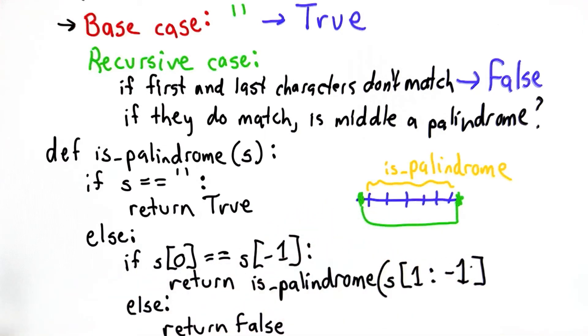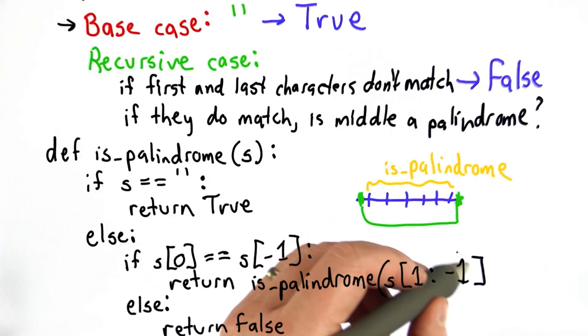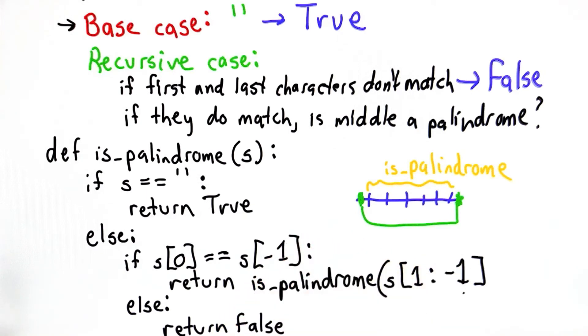And remember, with our indexing, the last value here is not included. So by having the last index as negative 1, that removes the final letter of the string.